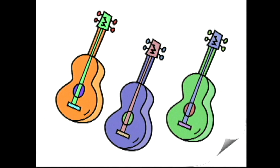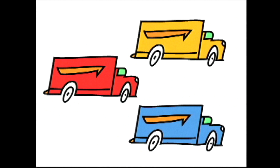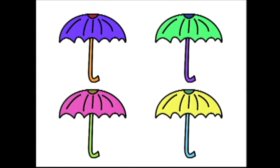Look at the picture of four airplanes! One of the airplanes is colored purple. Can you find the purple airplane? Here it is — the purple airplane. Here is a picture of three trucks. I colored one of the trucks red. Can you find the red truck? Here it is — the red truck. Look at the pictures of these four umbrellas. One of the umbrellas is colored pink. Can you find the pink umbrella? Here it is — the pink umbrella.